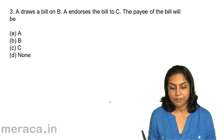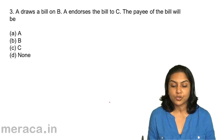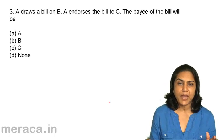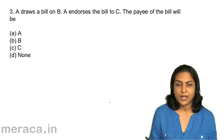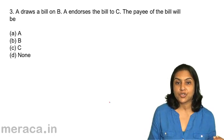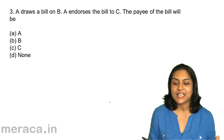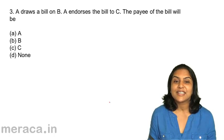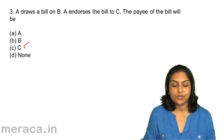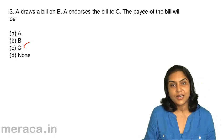A draws a bill on B, but A endorses the bill to C. The payee is the person who will receive the payment — the payer is the person who makes the payment. C will receive the payment. Therefore, the correct answer should be 3C — Mr. C.